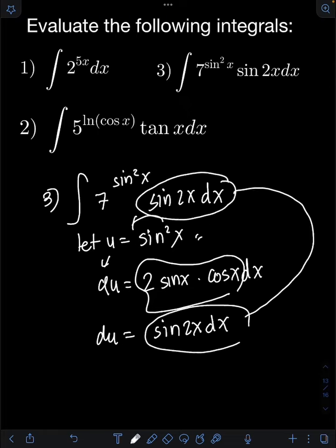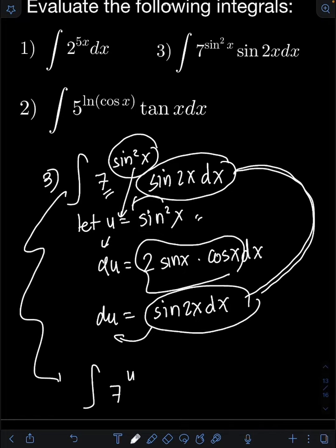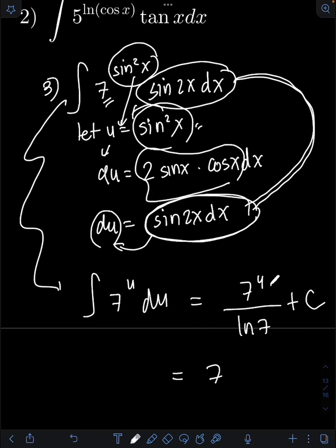We have created the sin 2x dx term from the original integral, which is now equal to du. Substituting, the base 7 raised to sin squared x becomes 7 raised to u, and sin 2x dx equals du. Evaluating the integral of 7 raised to u du gives 7 raised to u over ln 7 plus c. Transforming back, the final answer is 7 raised to sin squared x over ln 7 plus c.